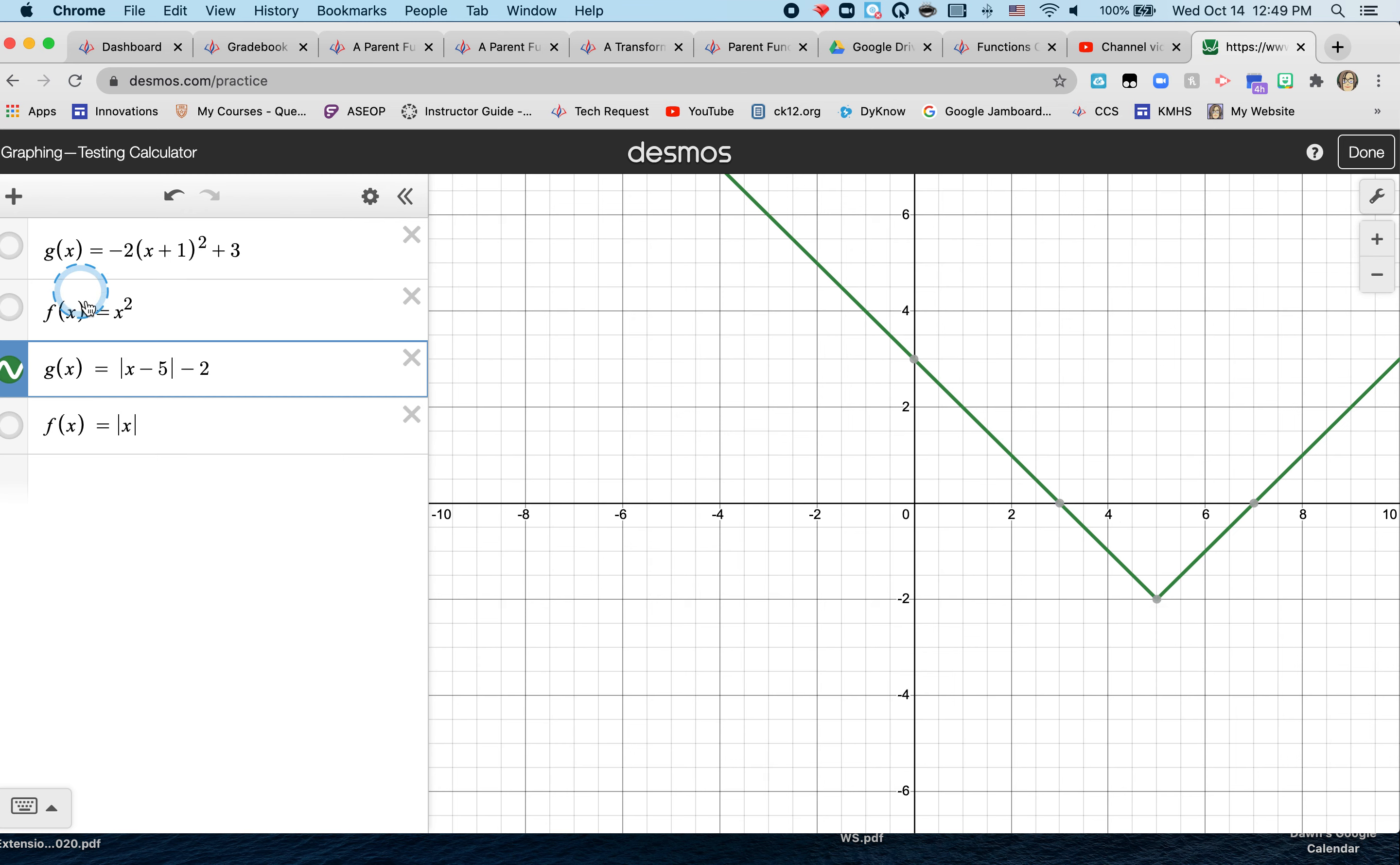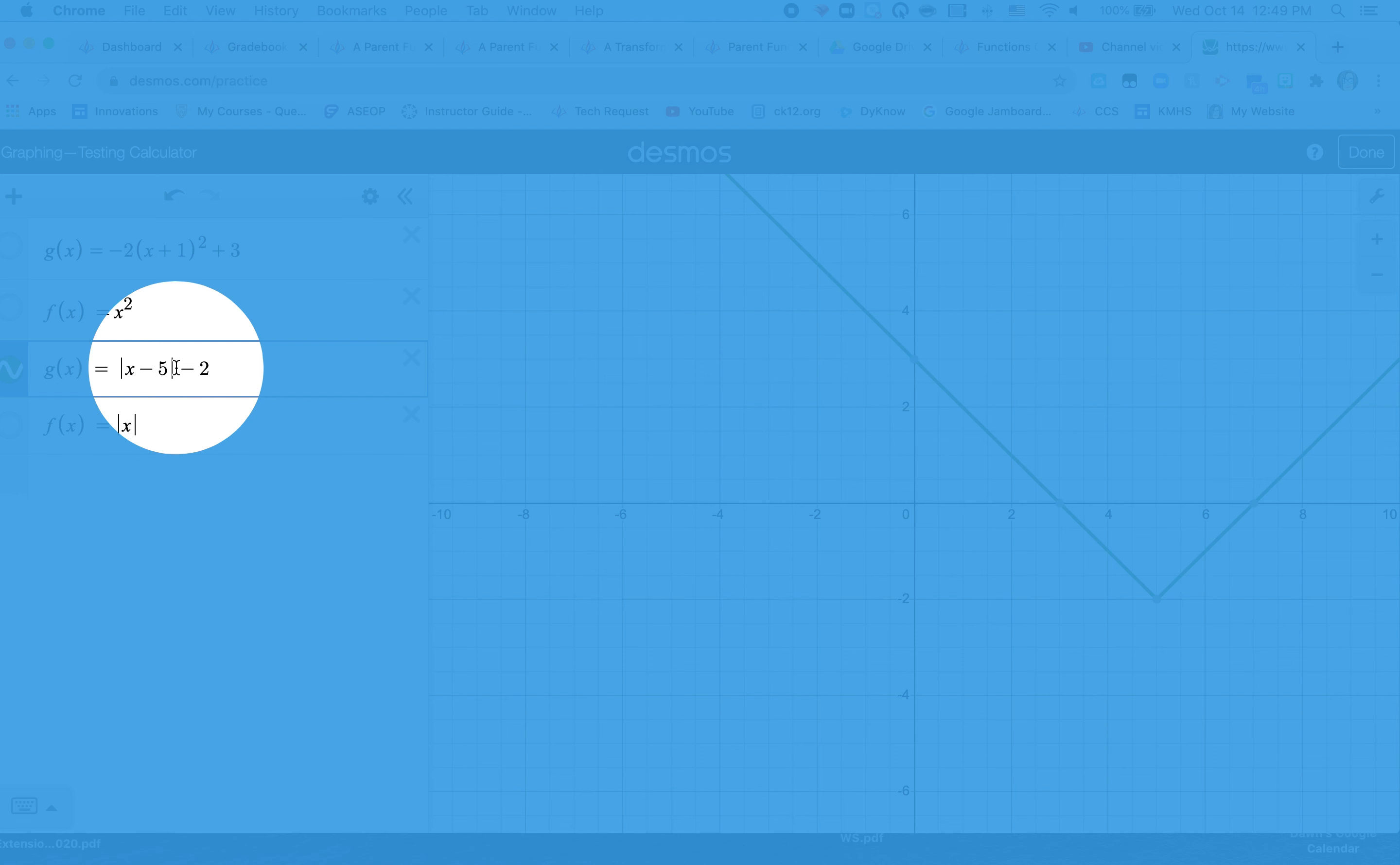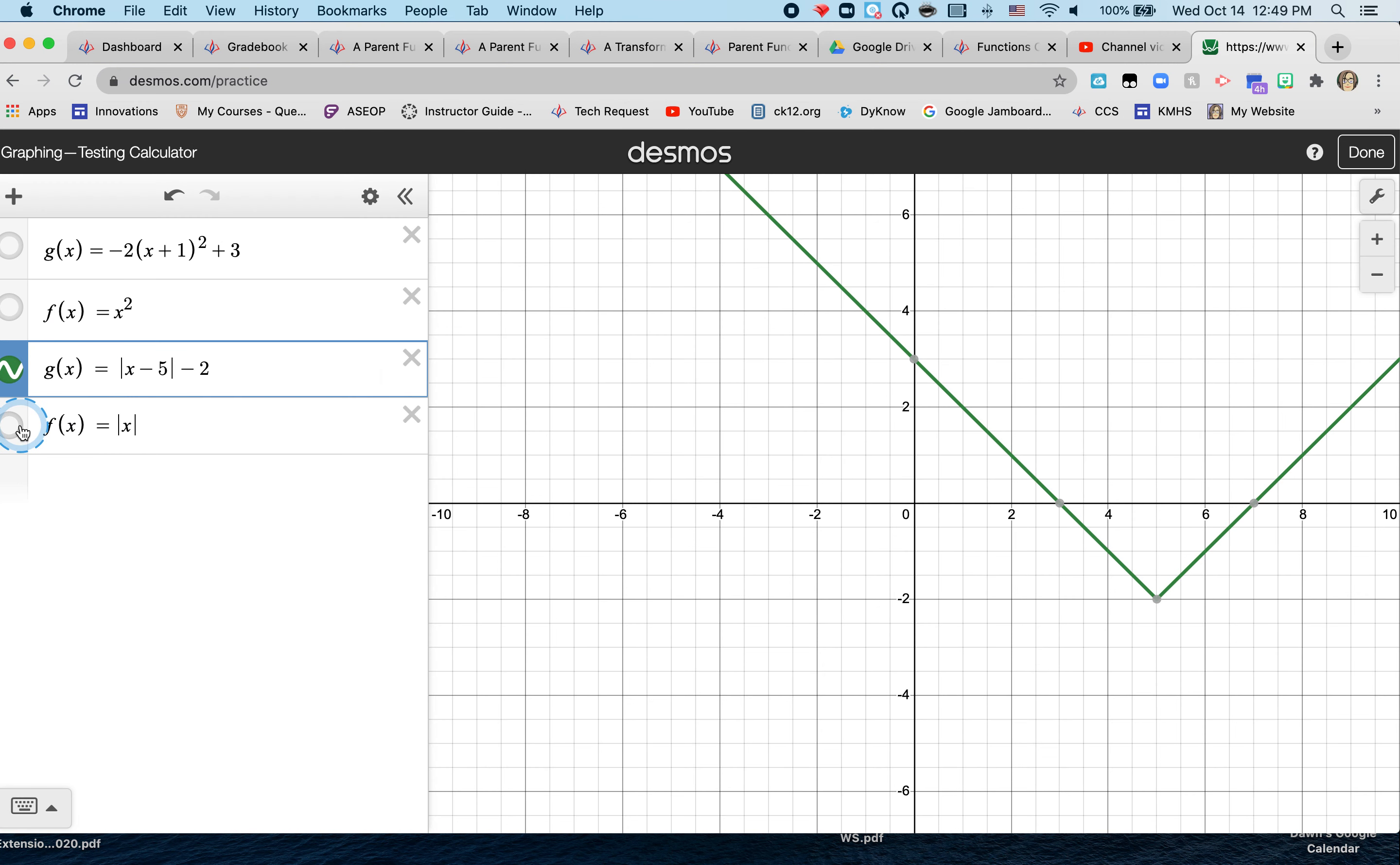Well, looking at the shapes of the graph or noticing that I have an absolute value symbol here, that tells me that my parent function graph or my parent graph is the absolute value of x. Notice the shape is still a v.